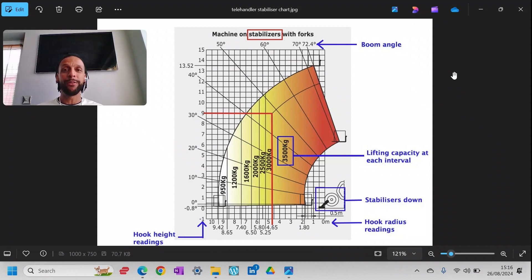The first one is with stabilizers down. The telehandlers will always lift more with stabilizers down because it stabilizes them and gives them stability. So here's the diagram with stabilizers down. Here this region you've got your maximum lifting capacity. On your x-axis you've got your radius, that's how far away the hook or the forks are to the telehandler. I should mention it stabilizes with forks, using forks.